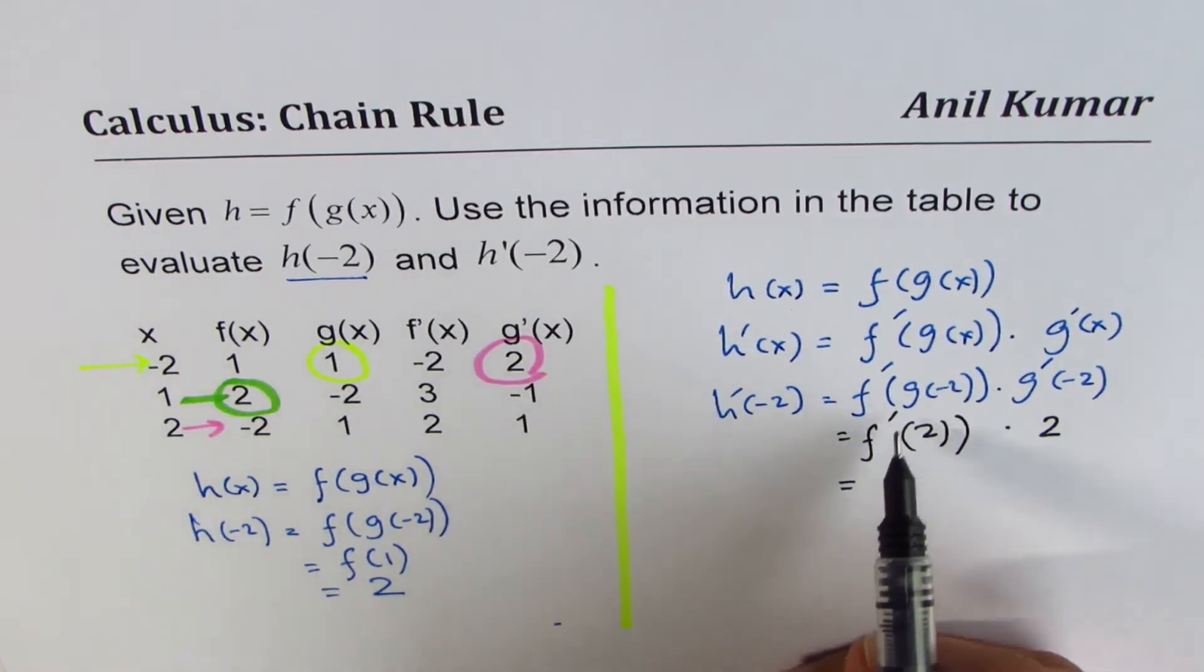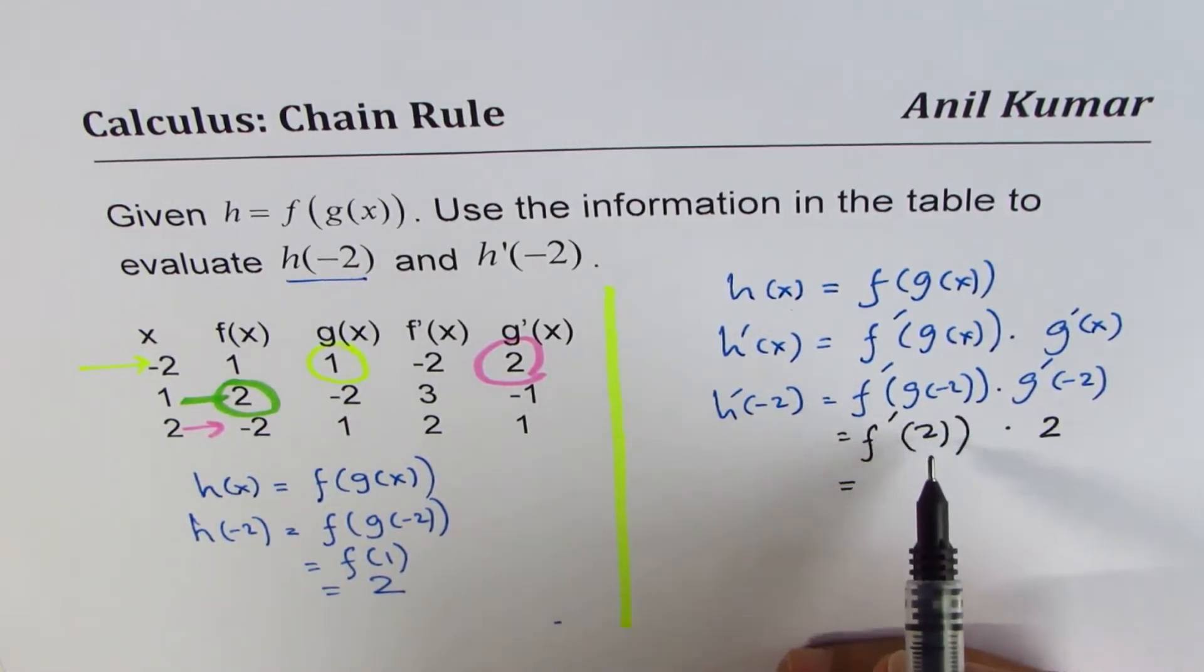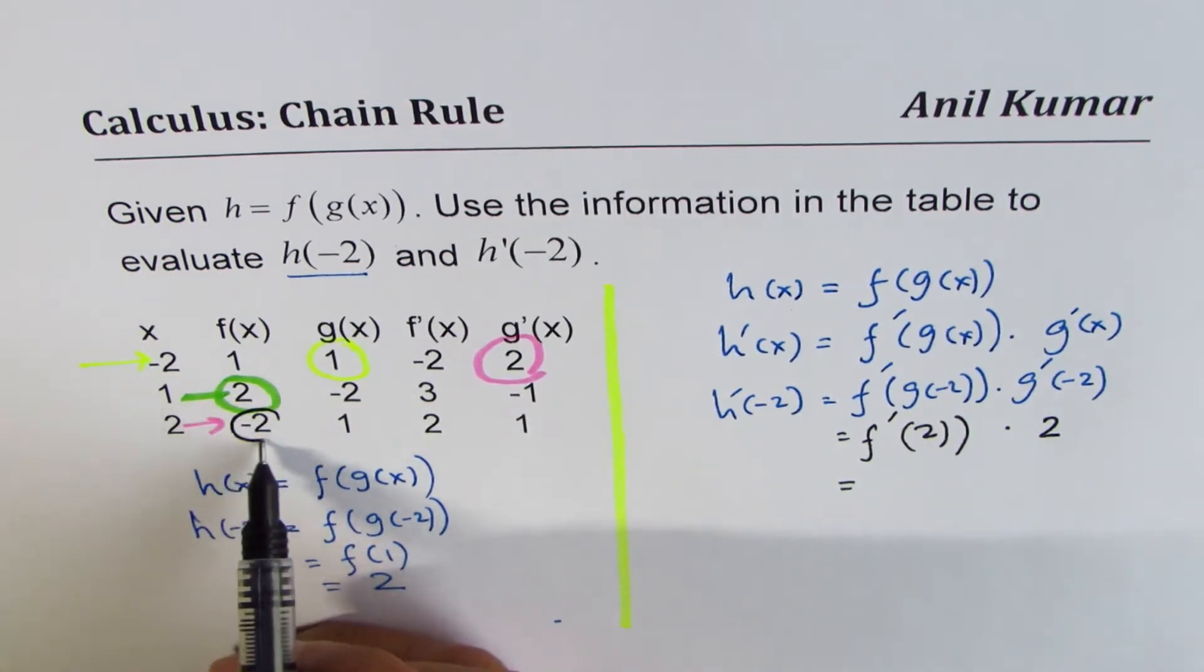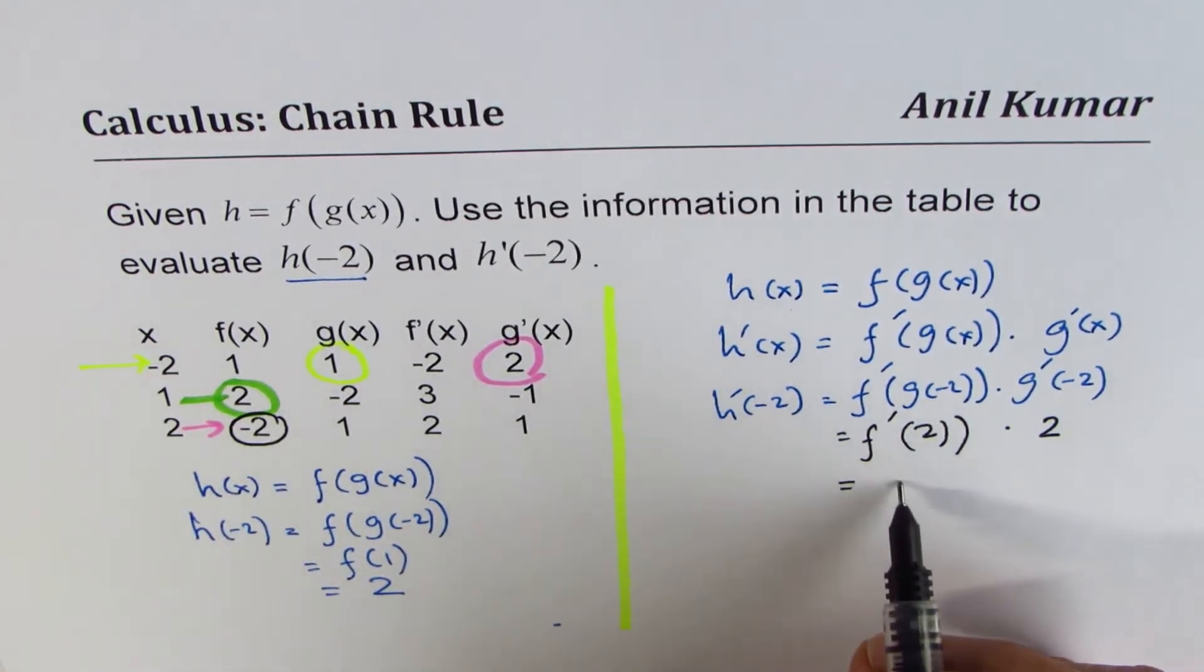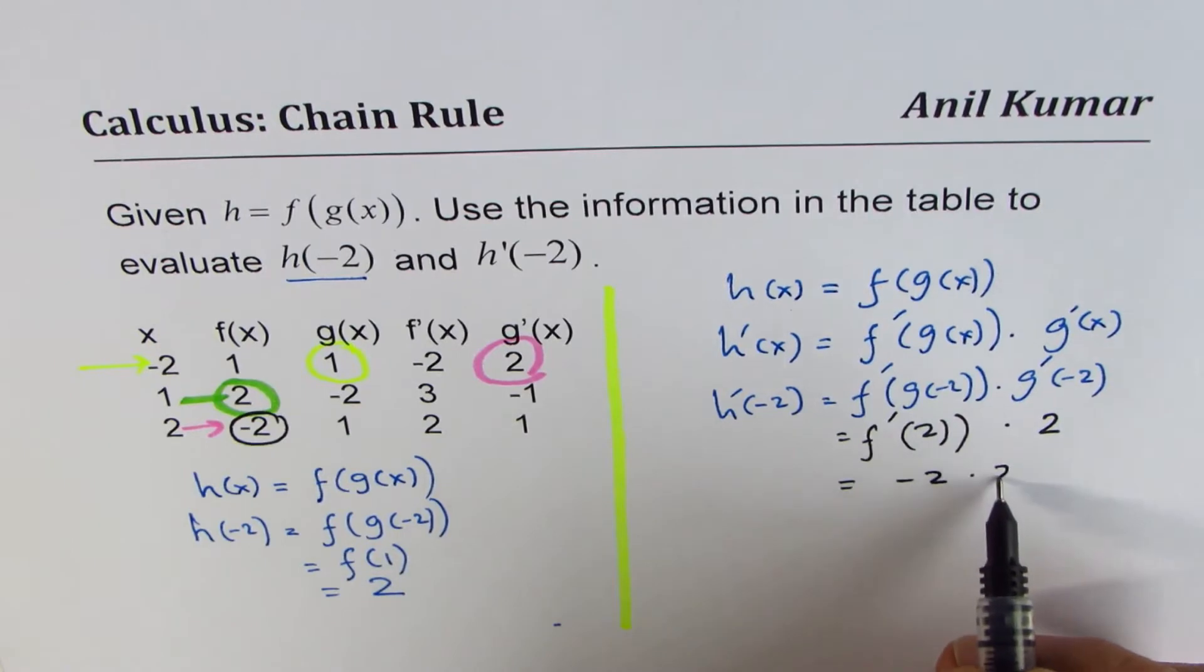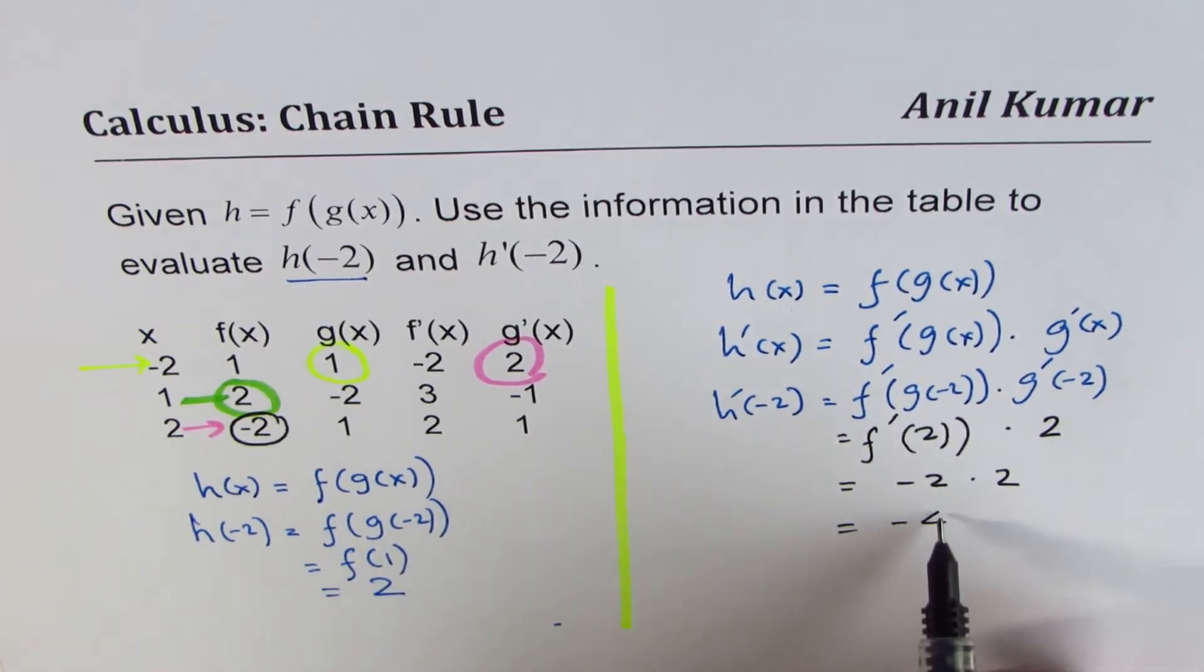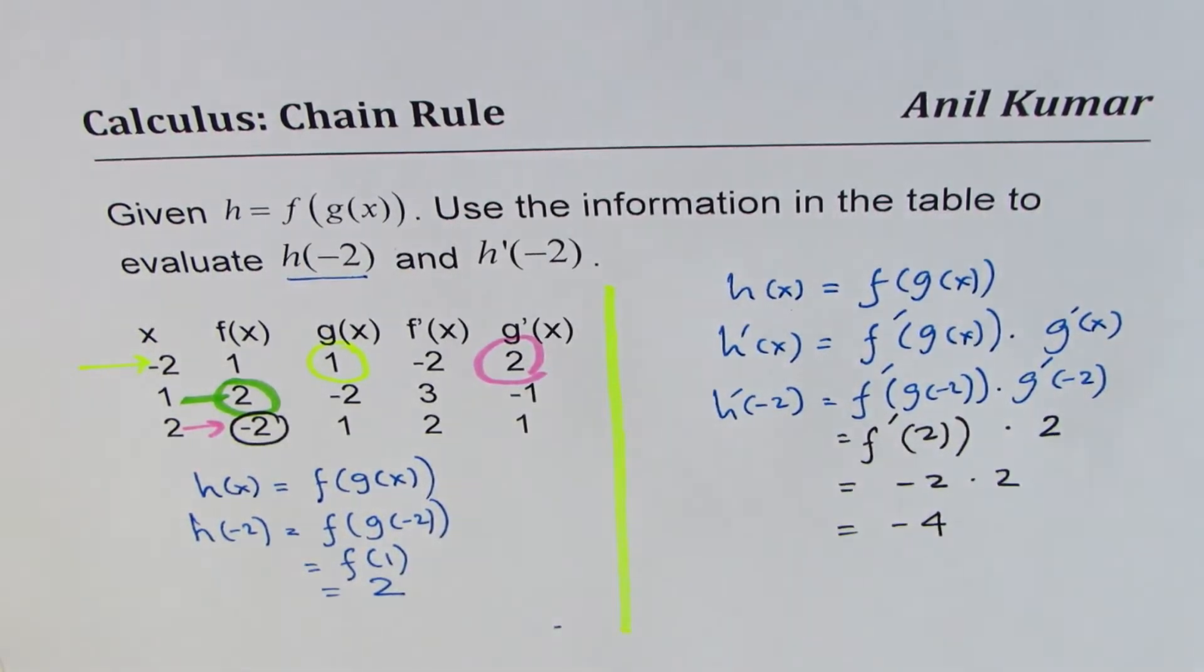Now we have to figure out the derivative of f at 2. So at 2, the derivative of f is minus 2. We replace that by minus 2 times 2, and we get our answer as minus 4. That is how you can actually read the derivatives from the table and answer such questions.